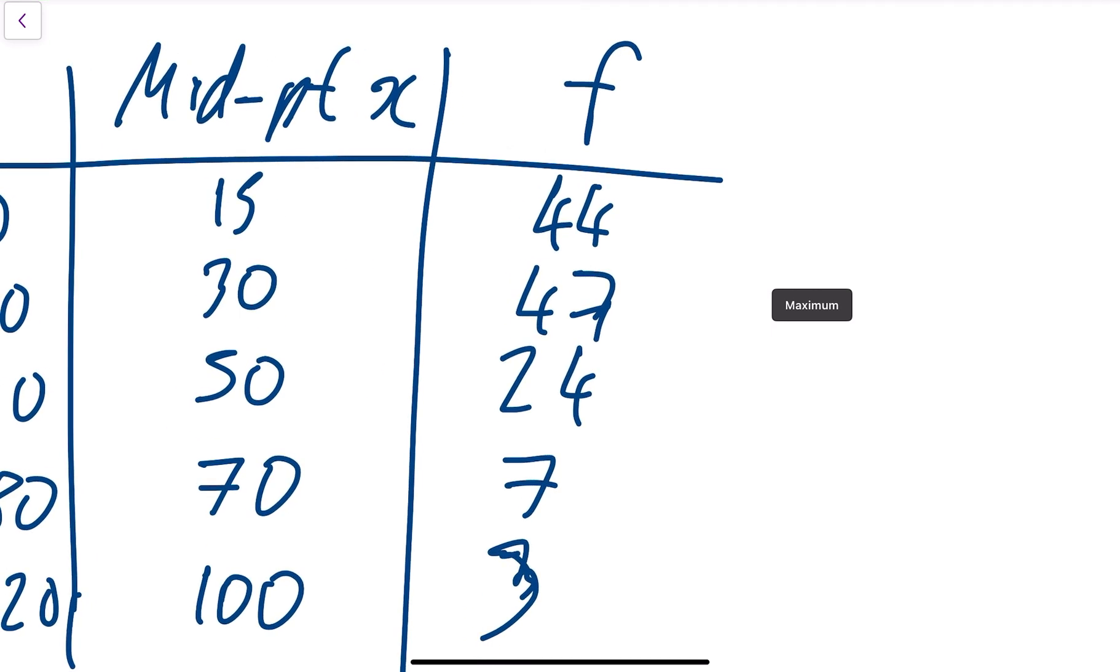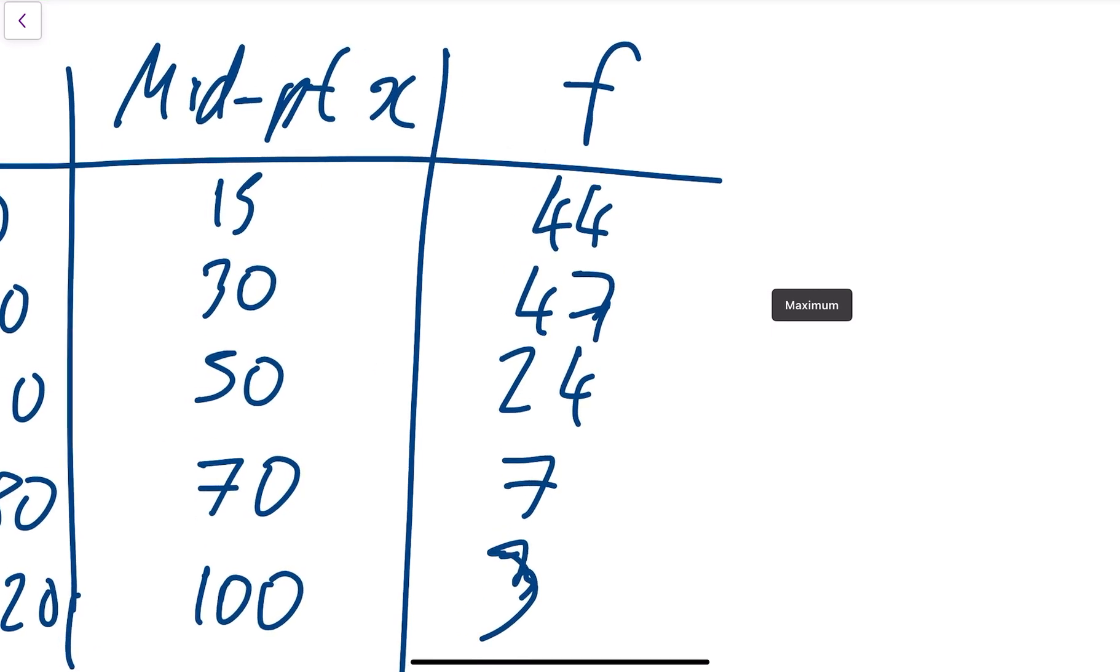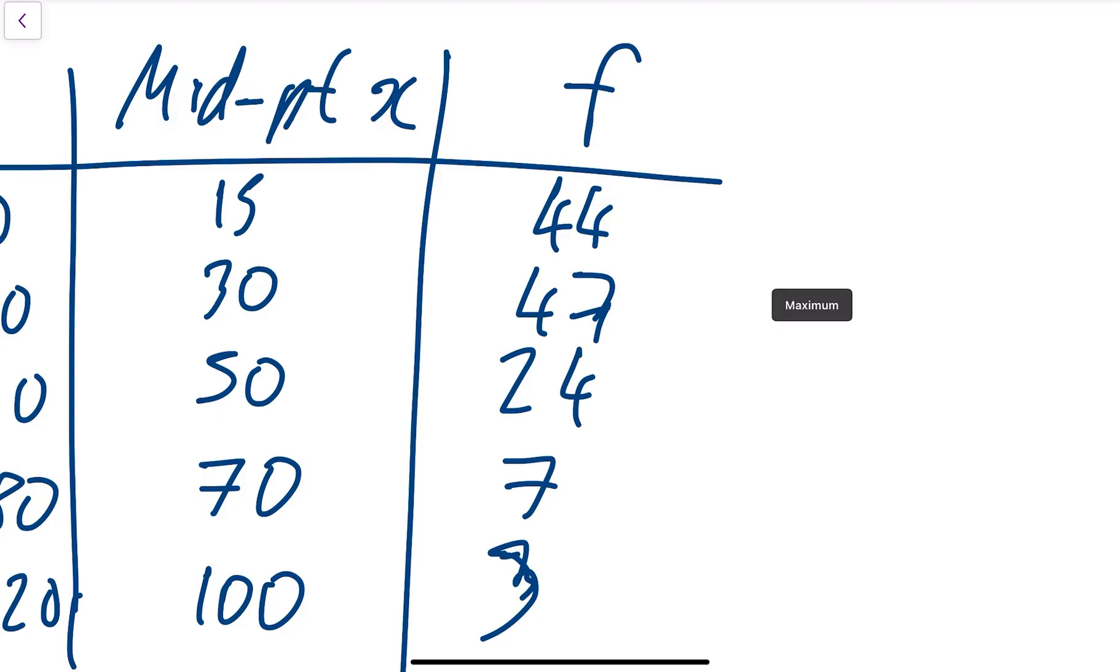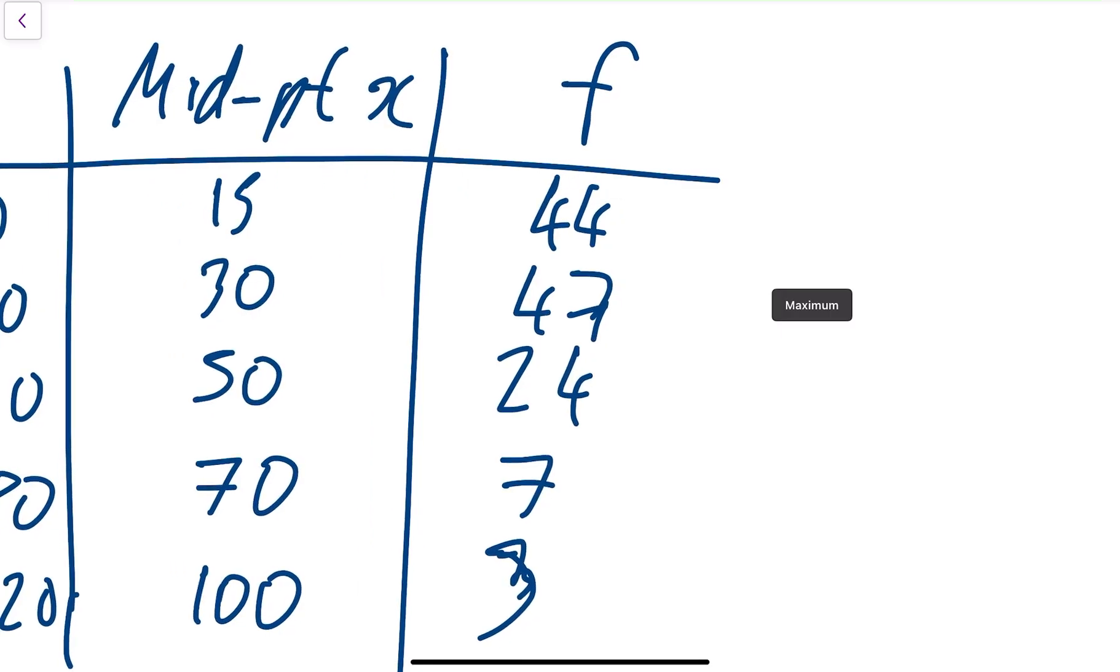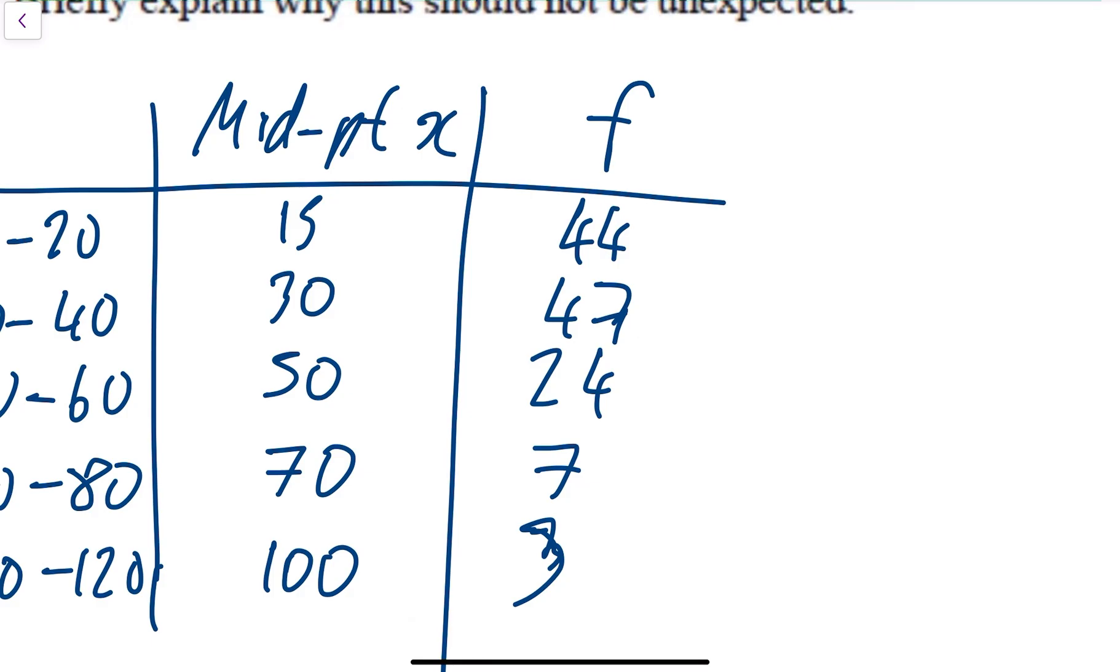You want to put in all of those X values: 15, 30, 50, 70, and 100. Use your selector arrows and on the top row for X put 15. Don't go across and do the corresponding frequency of 44—it takes too much time. Do all the X values. So hit 15, then hit equals, it takes you down a row, then do 30, hit equals, 50, hit equals, 70, hit equals, and then 100.